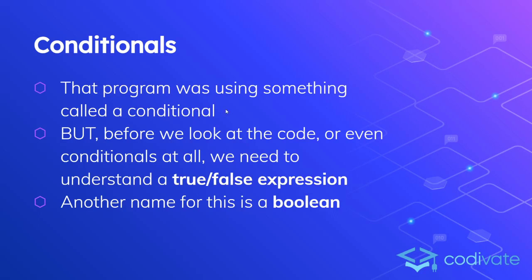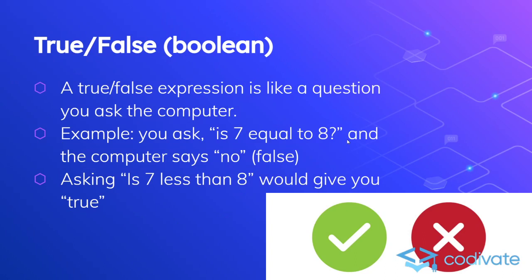In order to understand conditionals, we first need to understand what a Boolean is. A Boolean is a true or false expression. Something like 'is 7 equal to 8' is a Boolean — the computer will give you false. And if you say 'is 7 less than 8,' that's also a Boolean expression. The computer will give you true or false. If you ask it something, you will get true or false. That's what a Boolean expression is — there are only two possible answers: true or false.